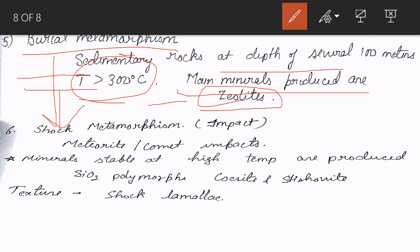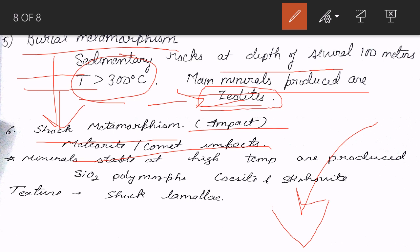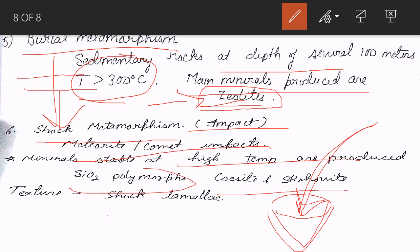The last type is shock metamorphism, also called impact metamorphism. This results from the impact of a meteorite or comet striking the ground, forming a crater-like structure. The impact generates a very high amount of heat in an instant, leading to the formation of minerals stable at high temperatures. We mostly see SiO₂ polymorphs like coesite and stishovite. The characteristic texture is shock lamellae, which radiate outward and can be seen in thin sections of the rock.